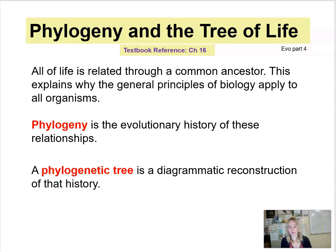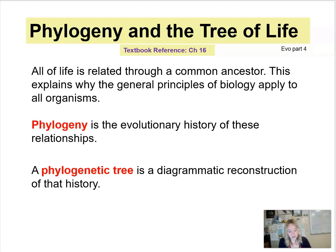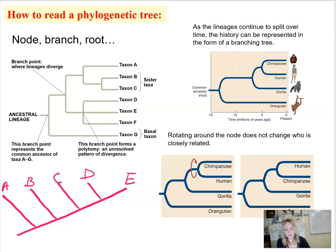Now we're going to talk about phylogenetic trees and how we reconstruct the history of life, which is actually a very difficult task. Think about it: life originated on Earth about 3.5 billion years ago, and today we believe we have about 10 million organisms. Trying to build that evolutionary history of how all these organisms are related is an extremely difficult task.